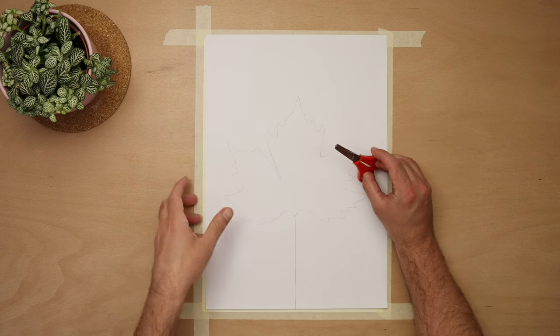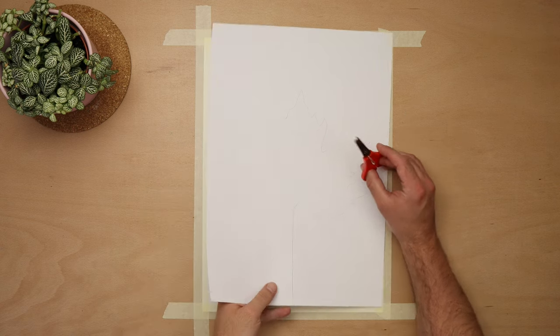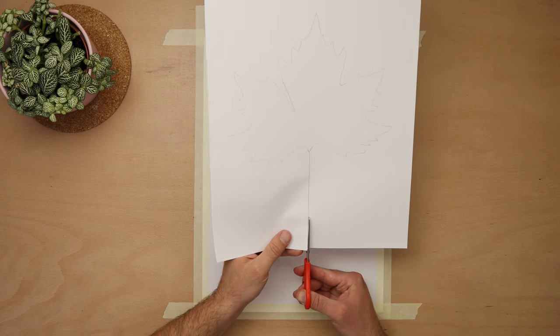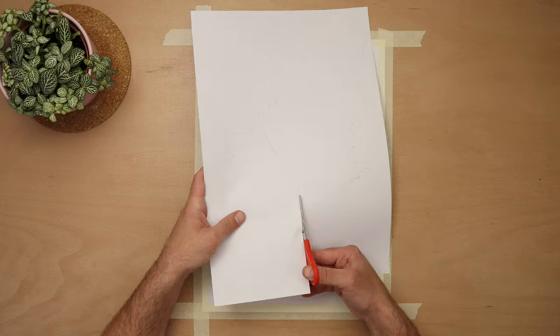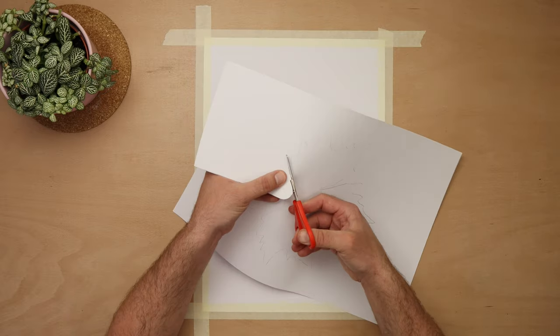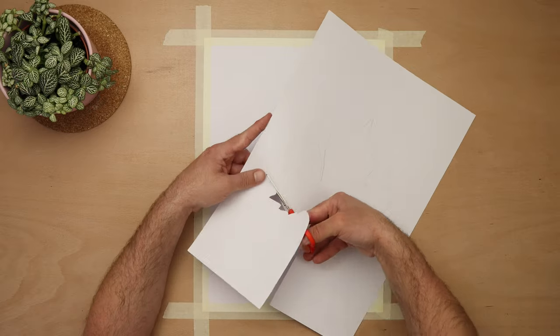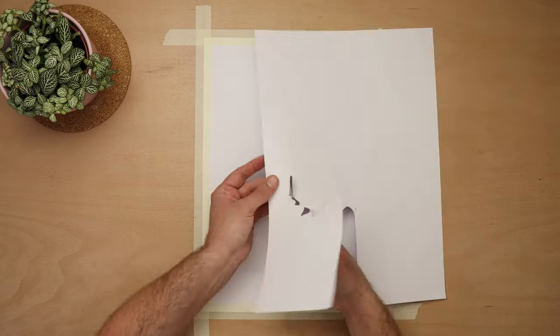Then grab some scissors and cut along the line to cut out the leaf. Make sure to cut it out in one go so that your leaf shape can be pulled out giving you a positive and negative leaf stencil. Now if your pupils or young ones struggle with cutting then I have a tutorial to help with that and I'll link it below.